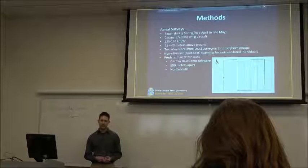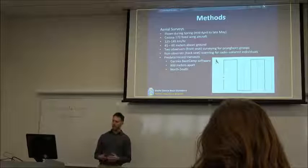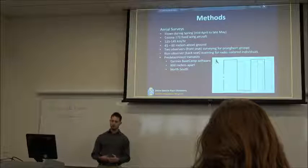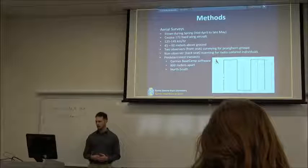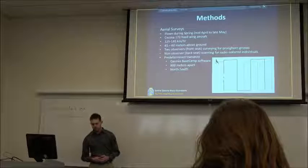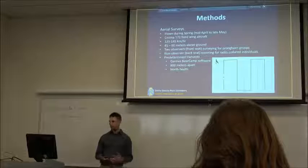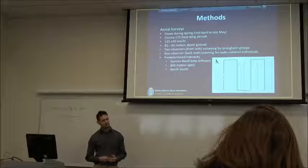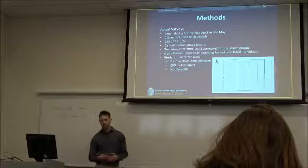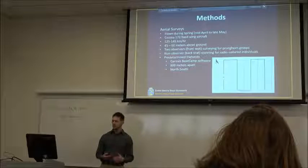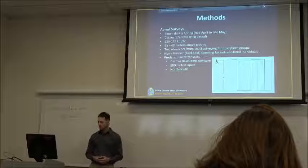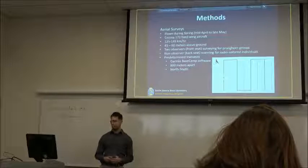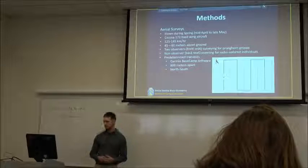Our goal is to collect at least 200 distinct observations based on radio collared pronghorn. In order to match South Dakota Game Fish and Parks' spring aerial surveys we're going to fly our surveys during the spring from mid April to late May using a Cessna 172 fixed wing aircraft flown at 125 to 145 kilometers per hour and 45 to 60 meters above the ground. There will be two trained observers in the back seat of the plane that will be surveying for pronghorn. One observer will be the pilot and the other observer will be a South Dakota Game Fish and Parks employee.